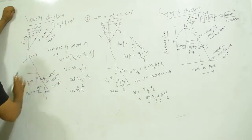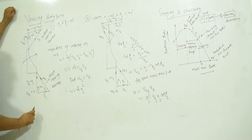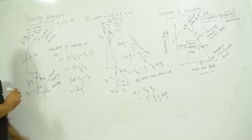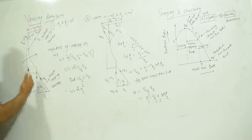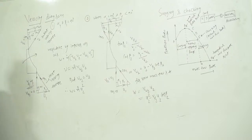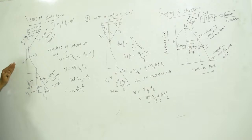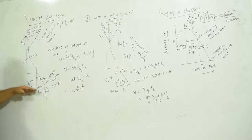I have drawn one blade of a centrifugal compressor. This is the inlet velocity triangle at the inlet of the blade, and this is the outlet velocity triangle at the outlet. In a centrifugal compressor the fluid enters axially, so v1 equals vf1, where vf1 is the flow velocity. The blade is moving in a direction called u1, which is the linear velocity of the blade.